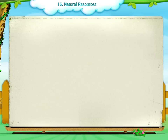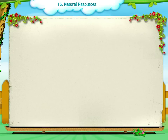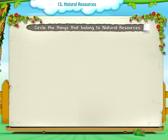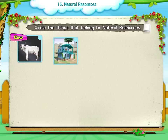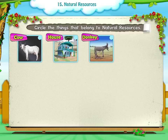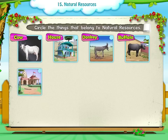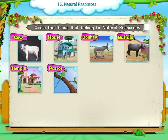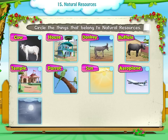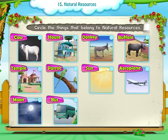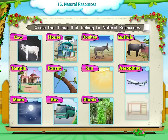Now, let us do some activities to revise our natural resources. Activity 1: Circle the things that belong to natural resources. Cow, House, Donkey, Buffalo, Temple, Parrot, Sun, Aeroplane, Moon, Bus, Plants, Table.